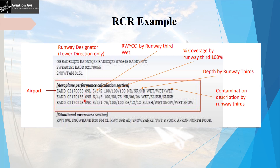The report is for runway 09R Right. The first, second, and third thirds have condition codes of 5, 4, and 3 respectively. Contaminant coverage is 100% on the first third, 50% on the second, and 75% on the third. The depth of contaminant on the first third is not reportable; on the second and third thirds it is 6mm. The description of contaminant is wet. You can similarly decode the entry for runway 09R Center.